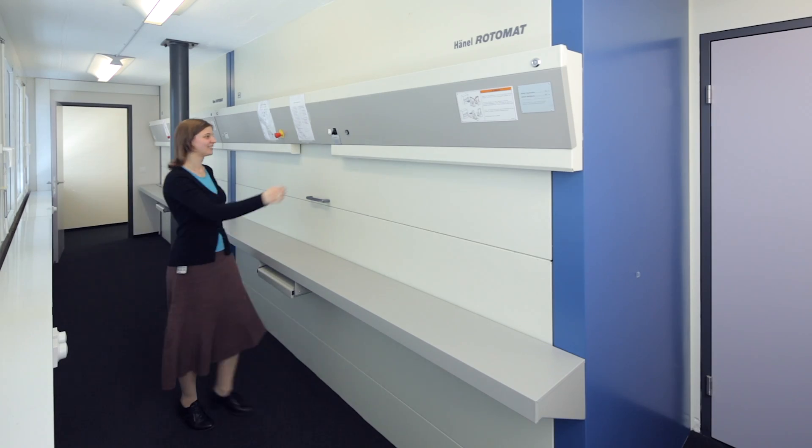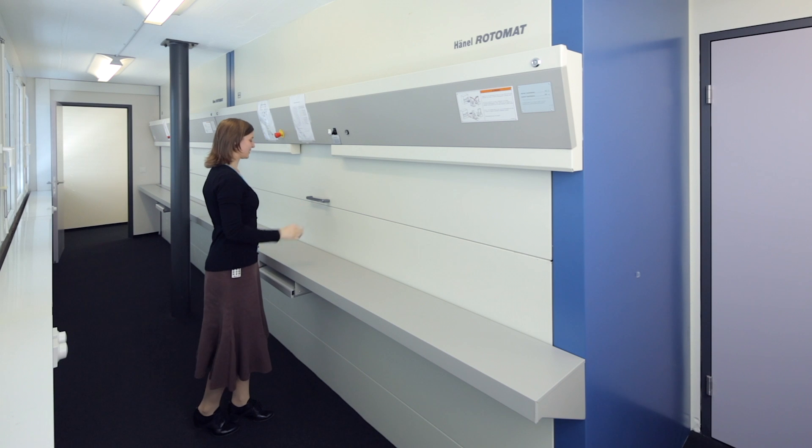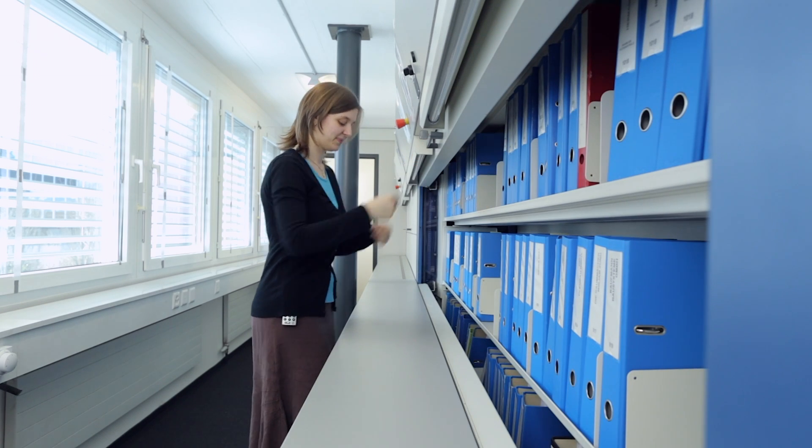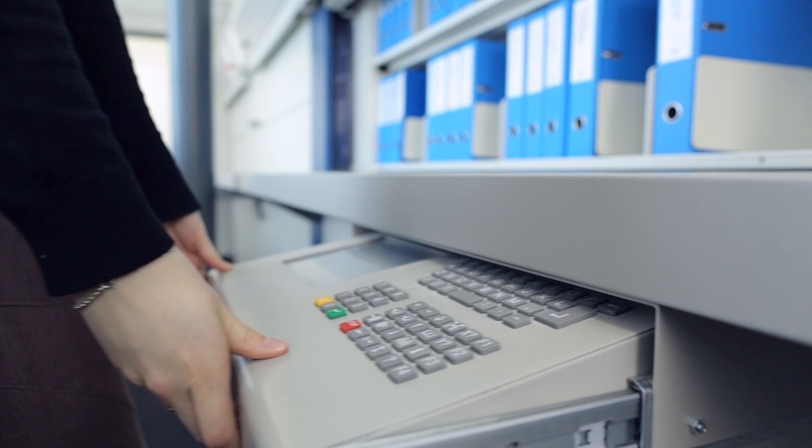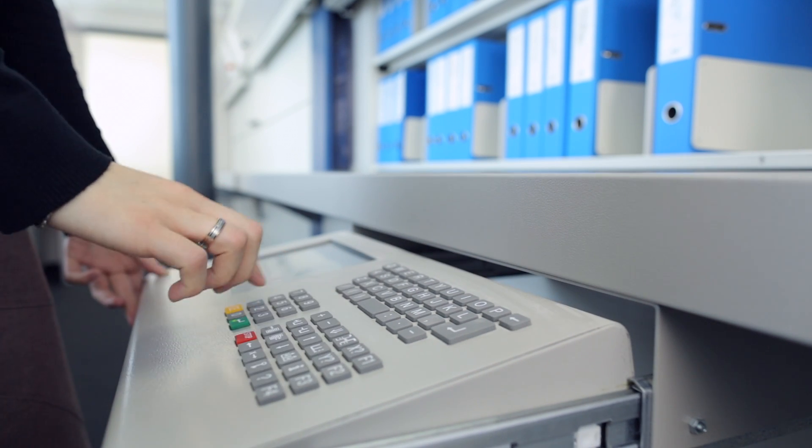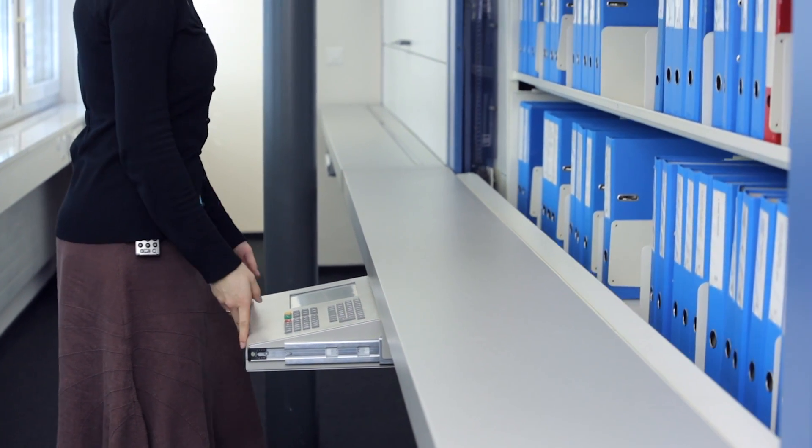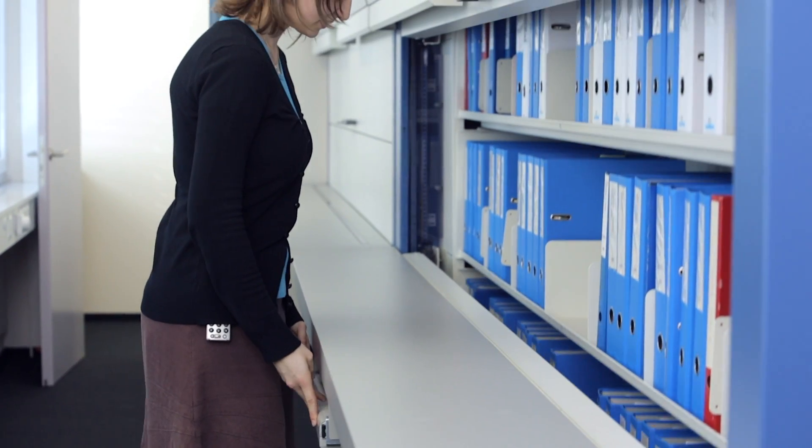The Haino Rotomat can be adapted so flexibly to buildings and office space that it ensures optimum use of available storage area. The Haino Lean Lift control unit with a high resolution TFT touchscreen is stowed ergonomically under the work counter and is easy to use.